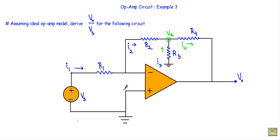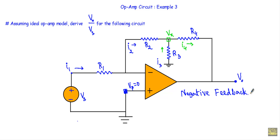Here you will see this non-inverting terminal is connected to the ground terminal. Therefore Vp will be equal to zero. Now this output terminal is connected to the inverting terminal through a resistive network, so I can say the circuit is in negative feedback. Due to negative feedback, Vn and Vp will be equal, so Vp equals zero and therefore Vn will also be equal to zero.